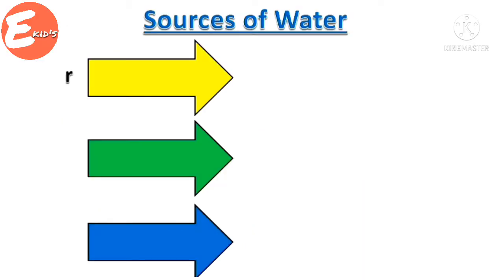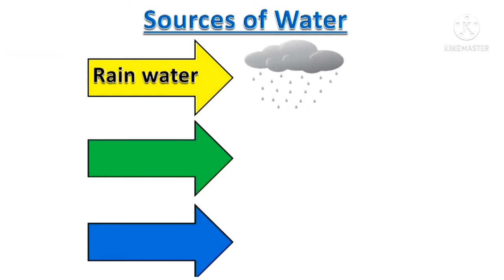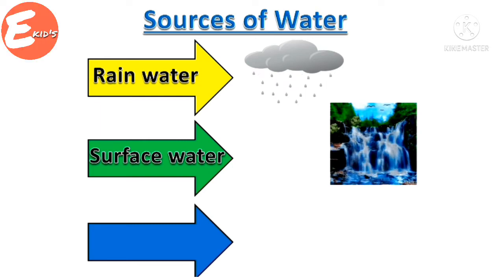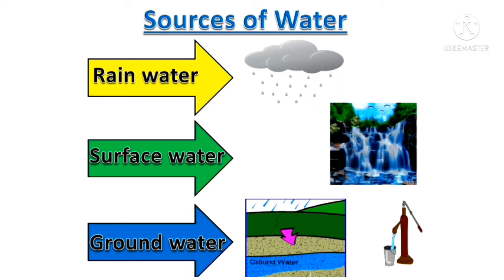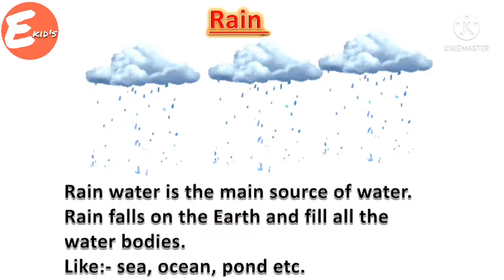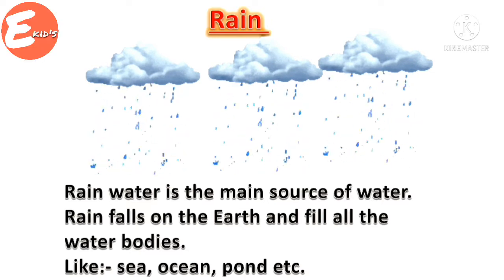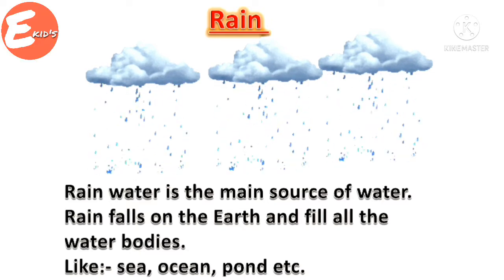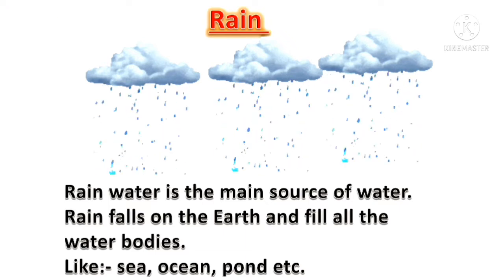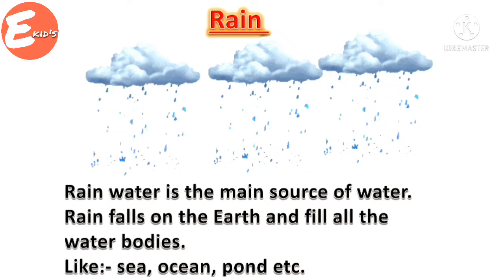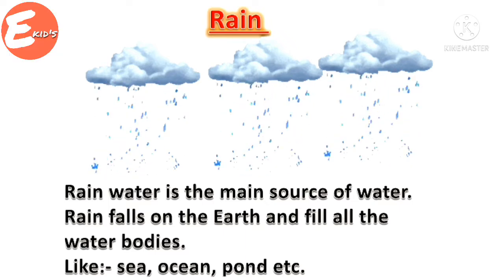Sources of water: First is rain water, second is surface water, third is ground water. Let's see one by one. Rain water is the main source of water. Rain falls on the earth and fills all the water bodies like sea, ocean, pond, etc.